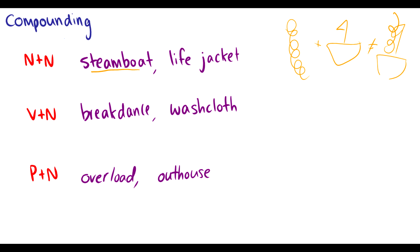We can do a verb and a noun — breakdance or washcloth. Breakdance: if you take break and add dance, you don't get someone breaking things while dancing, or someone taking a break while dancing. It's very different — it's just kind of cool to watch. A preposition and a noun: overload and outhouse. An outhouse isn't literally an inside outhouse — it's a place where you handle your business. These words do not simply join together; they take two concepts and create a new concept. That is compounding.